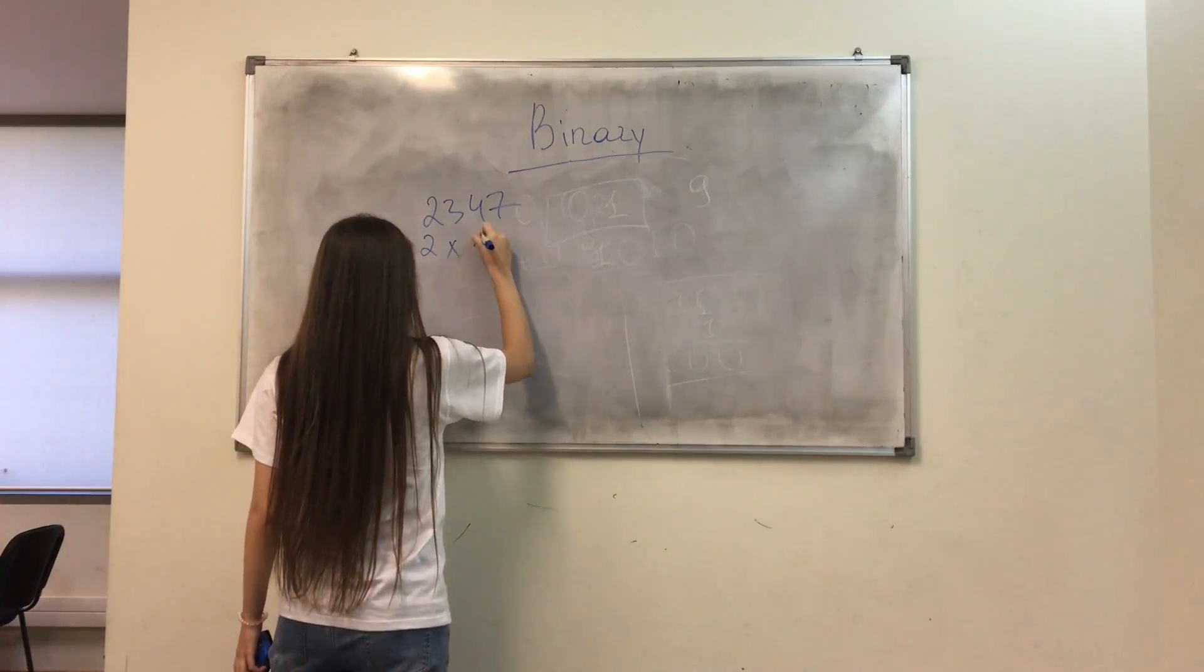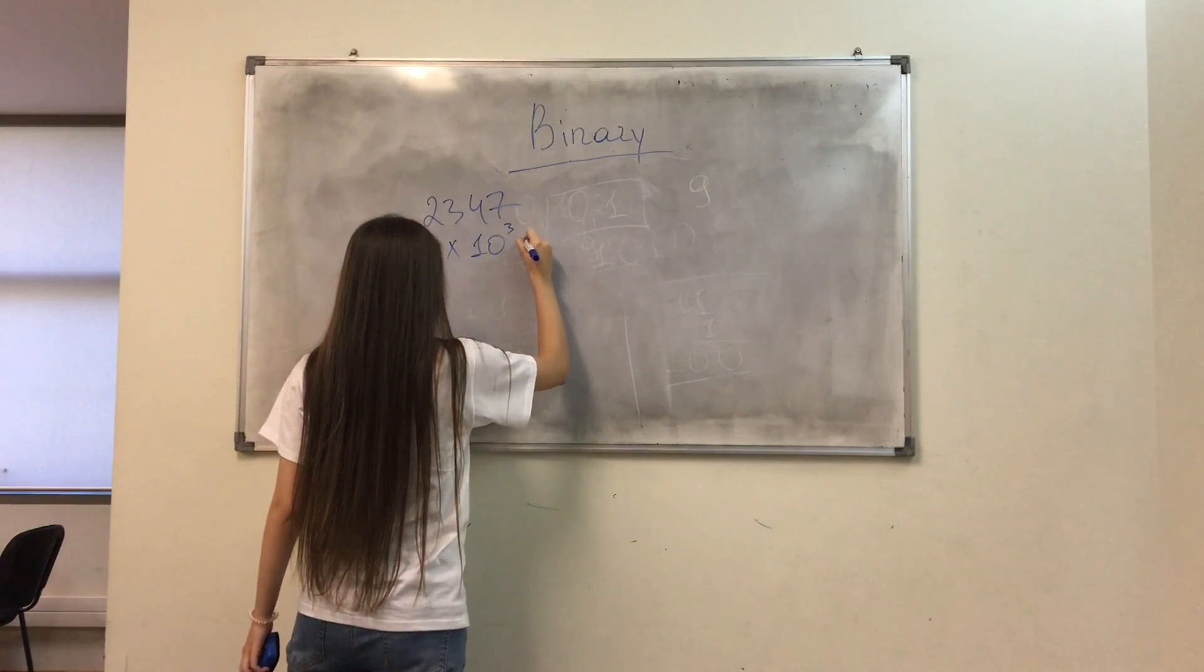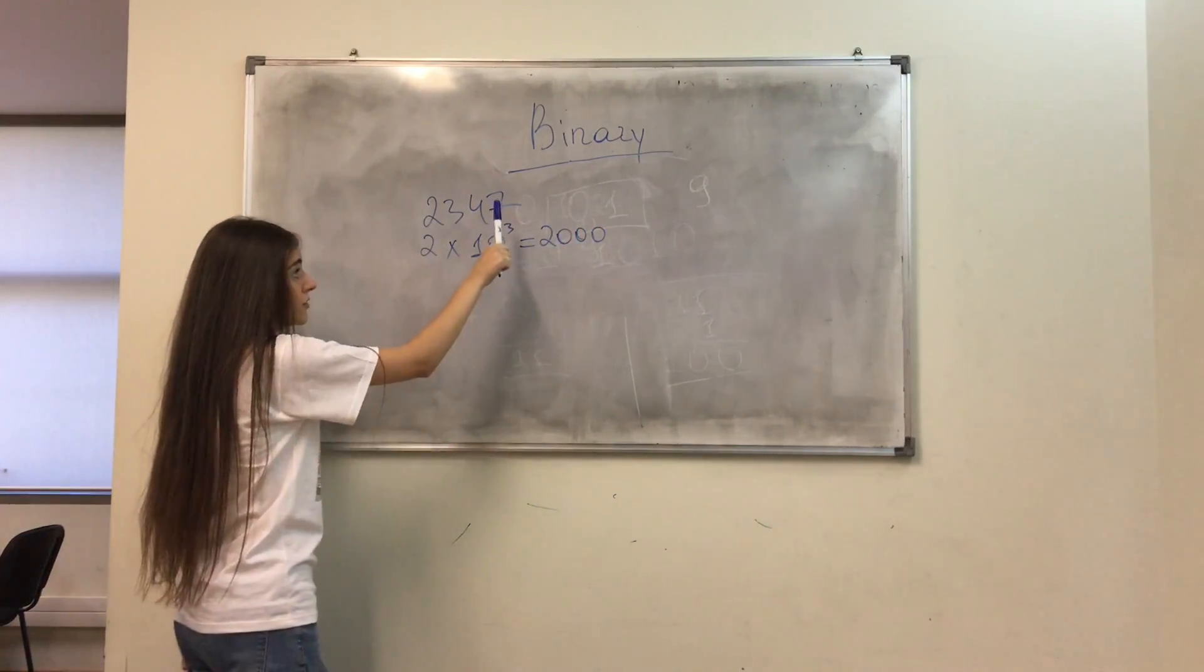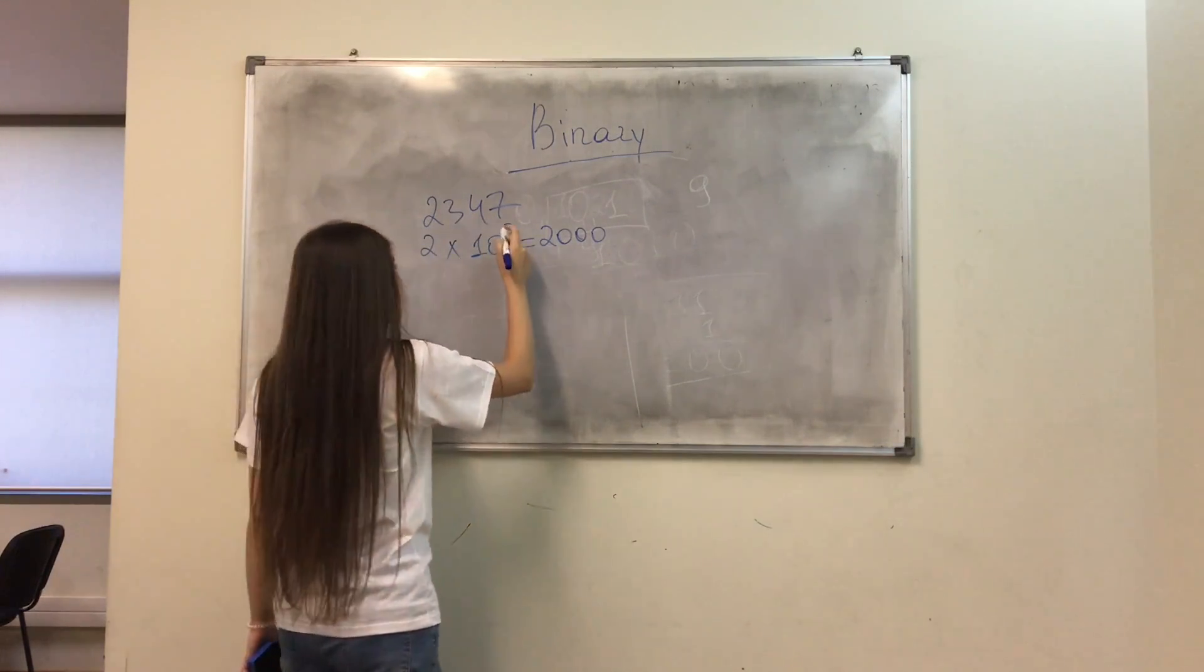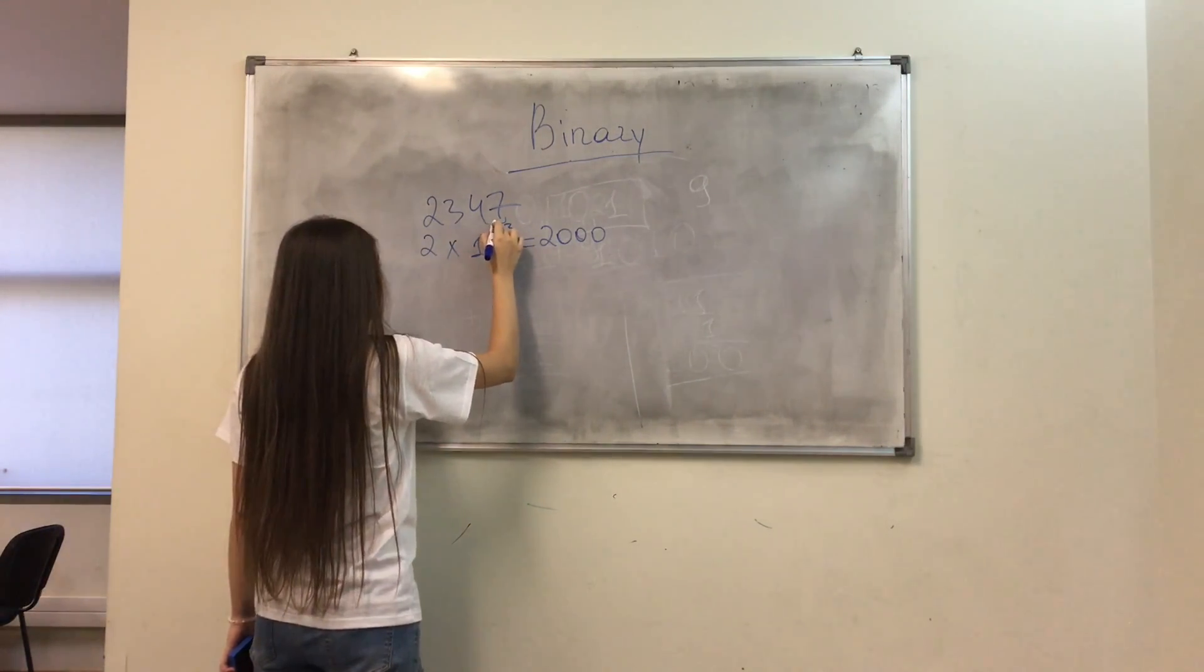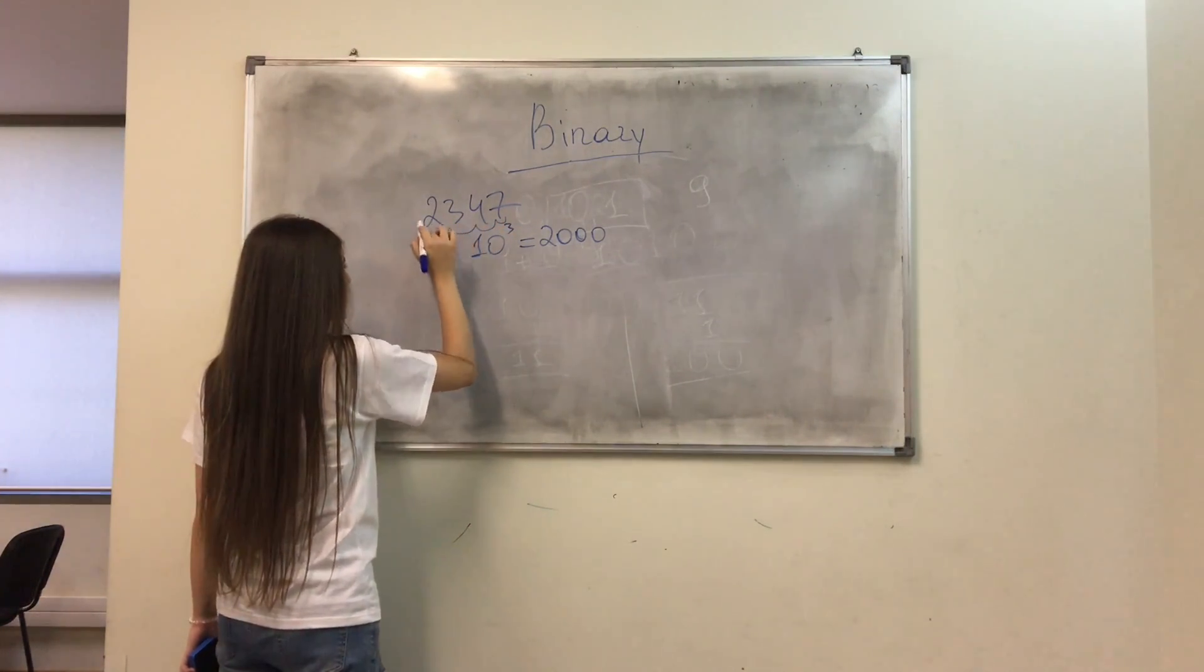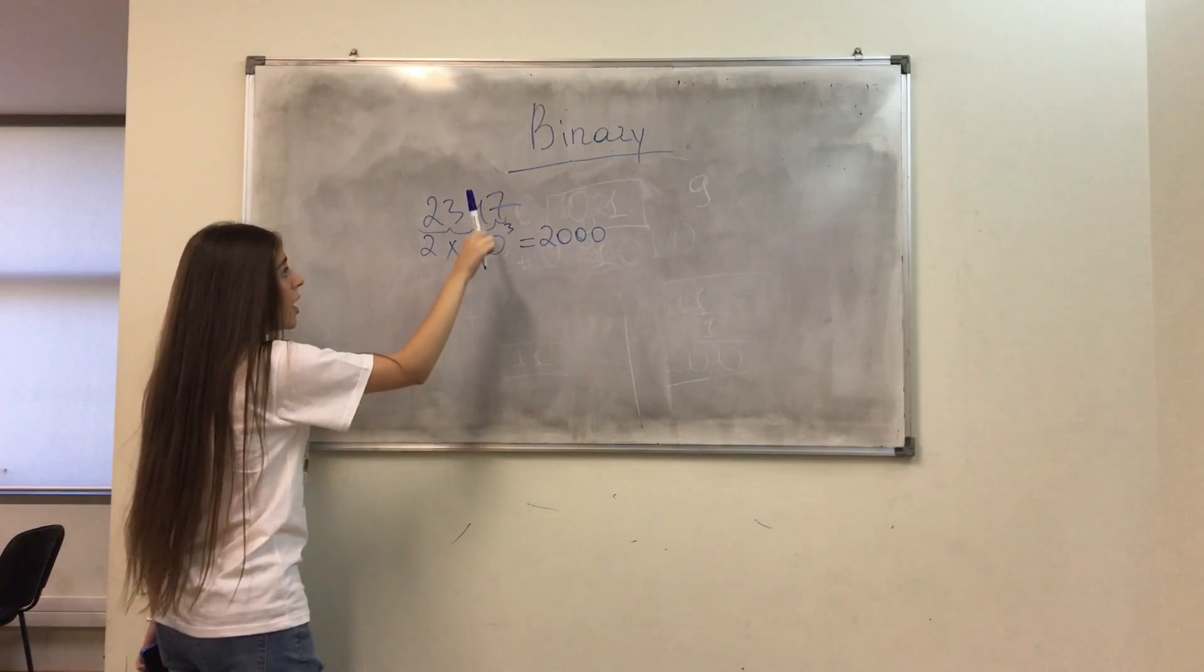We get 2 times 10 power of 3, which is 2000. Why 10 power of 3? Because this is the unit position, this is 10 position, this is 100 position and this is 1000 position, which is 10 power of 3.